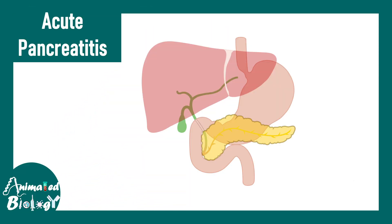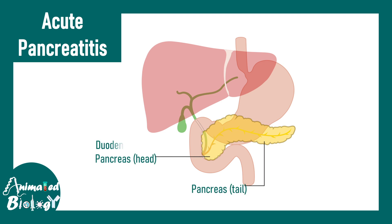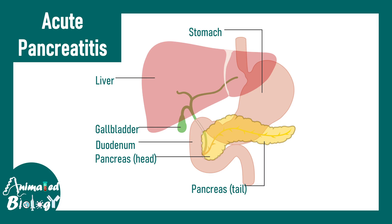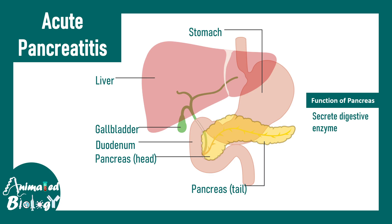Let me orient you to the pancreas anatomy first. Here is the pancreas — here is the head of the pancreas, here is the tail of the pancreas, and it kind of touches the duodenum. Here is the gallbladder, liver, and the stomach just for reference. The pancreas plays a vital role in digestion, secreting several digestive enzymes and many hormones.